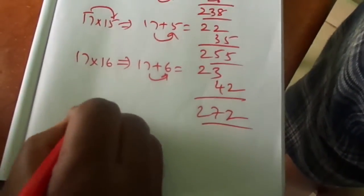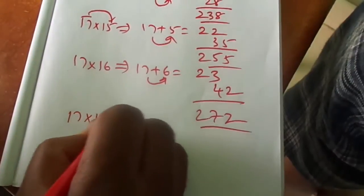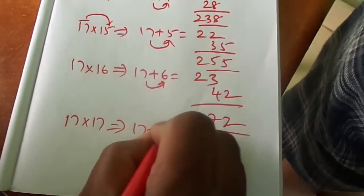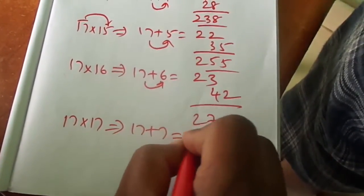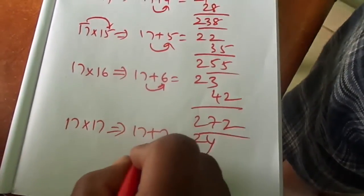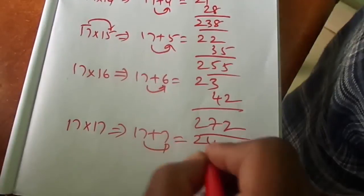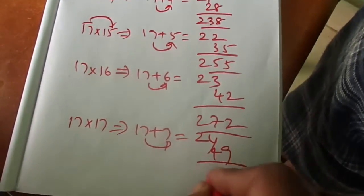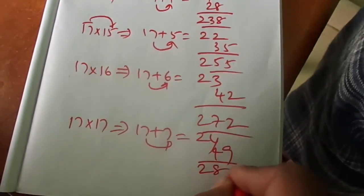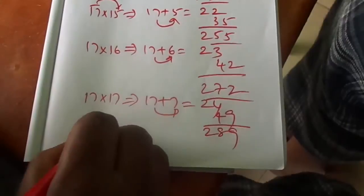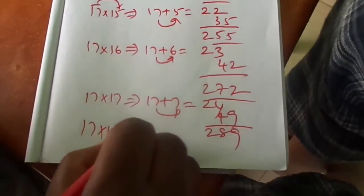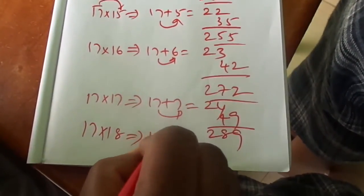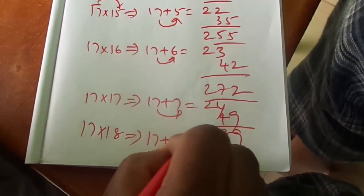17 17s: 17 plus 7 is 24. 7 sevens are 49. That is equal to 289.